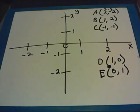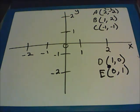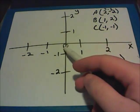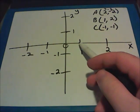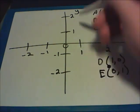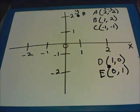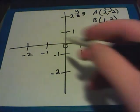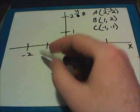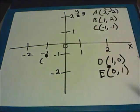Now try B, C, D, and E — don't be surprised if D and E throw you. B is located at one comma two. Starting at zero, we move to the right a positive one, and then on the Y line we move up a positive two. So B is right there. C is located at negative one comma negative one. We move to the left negative one and down negative one, so C is located right there.